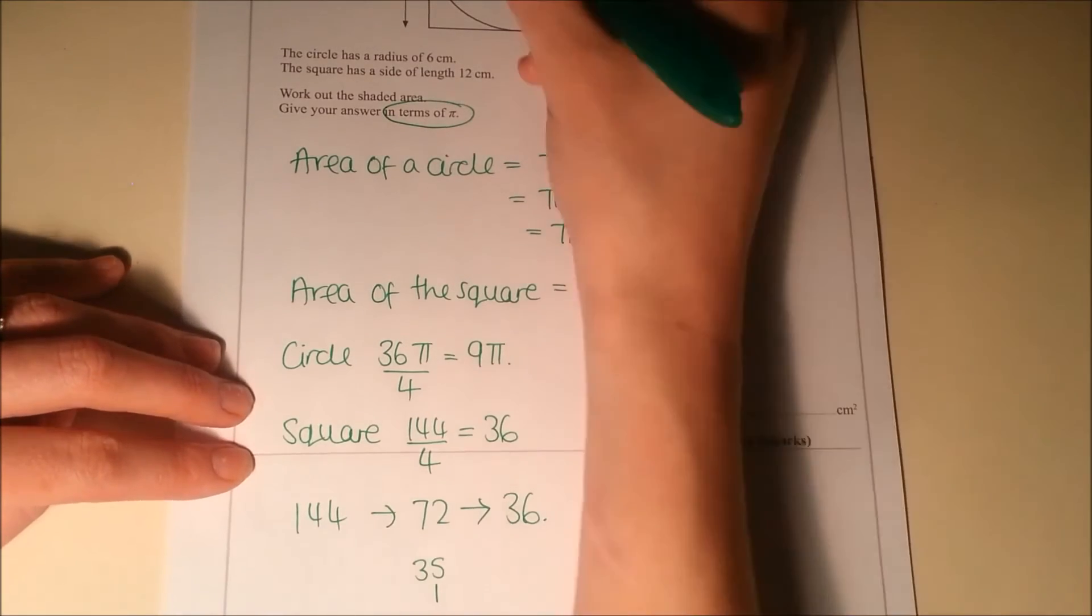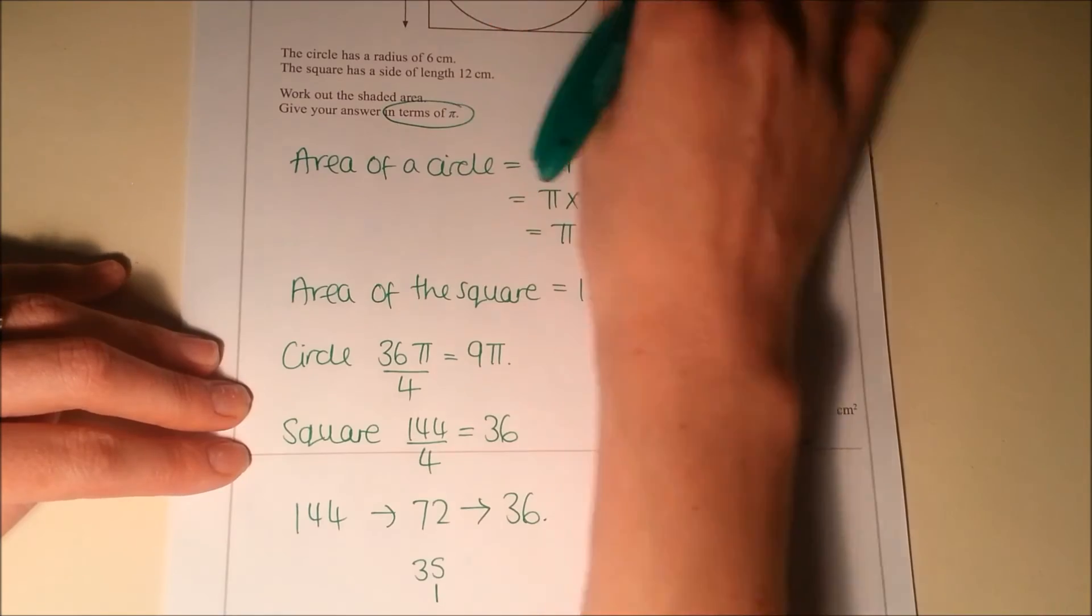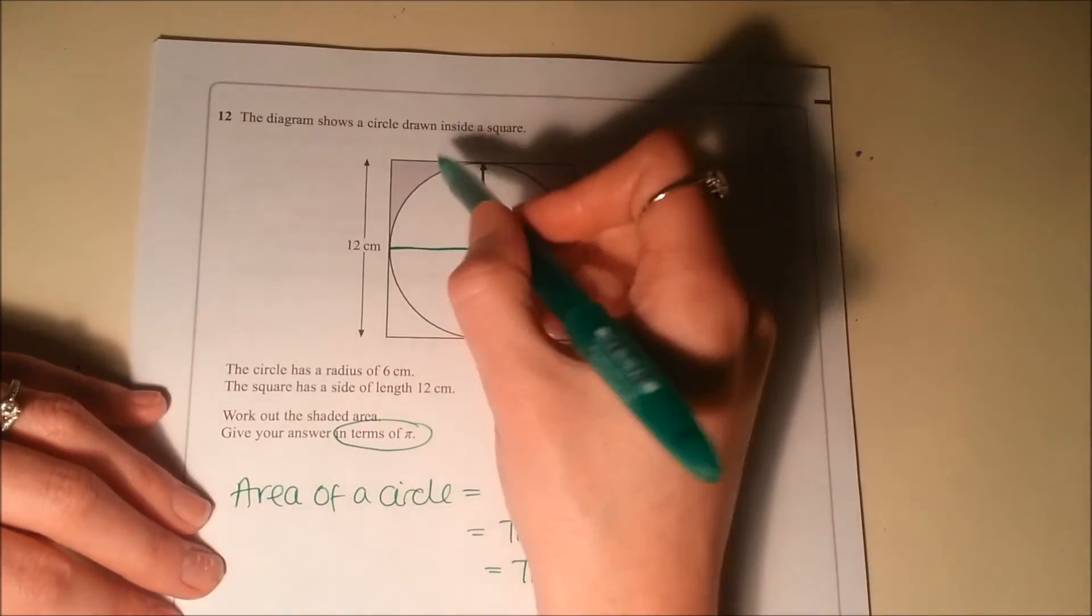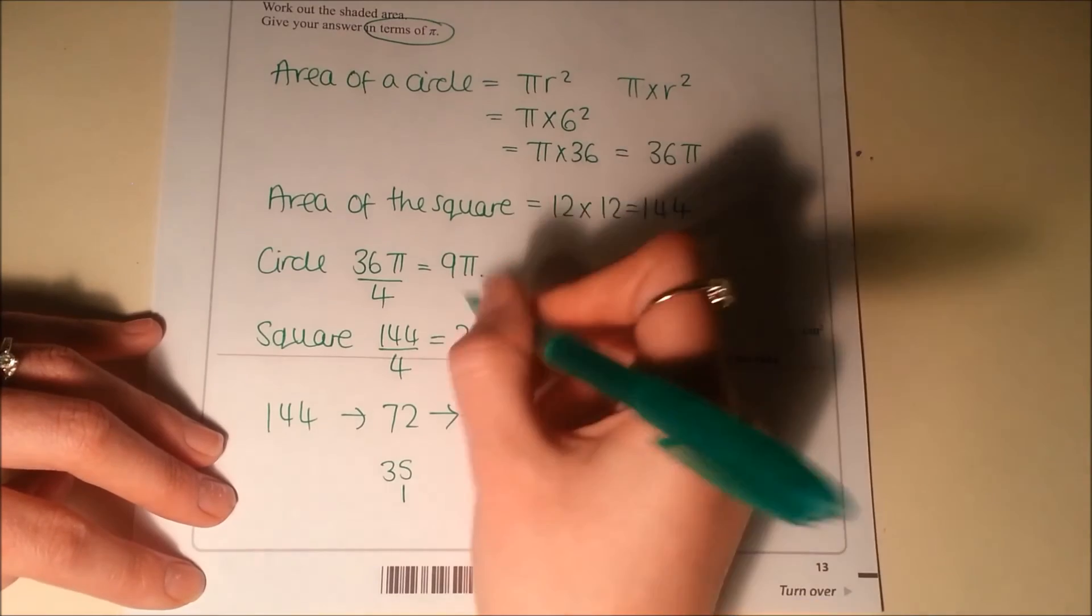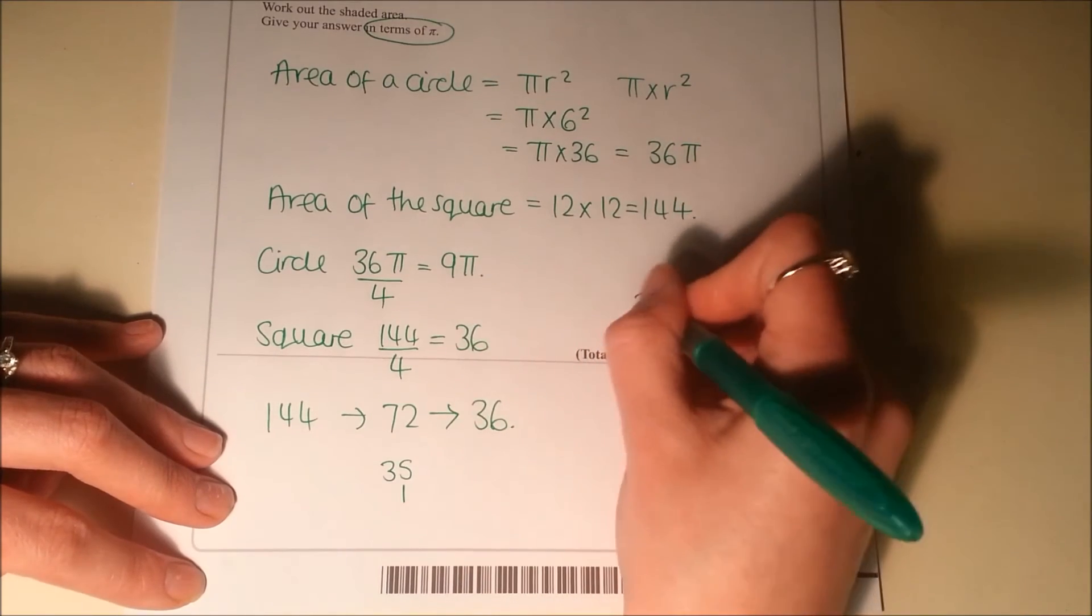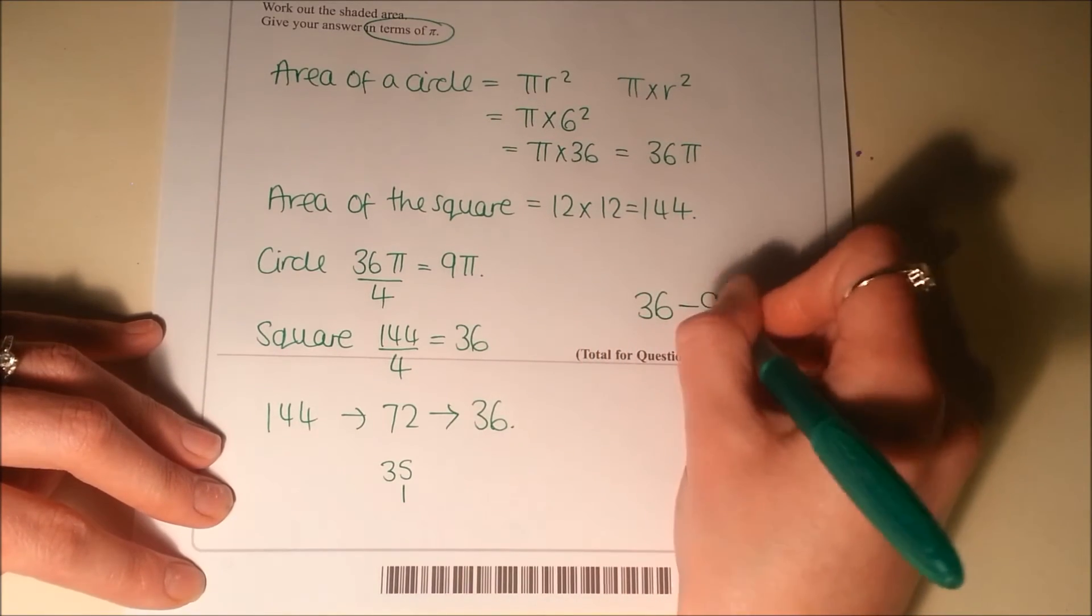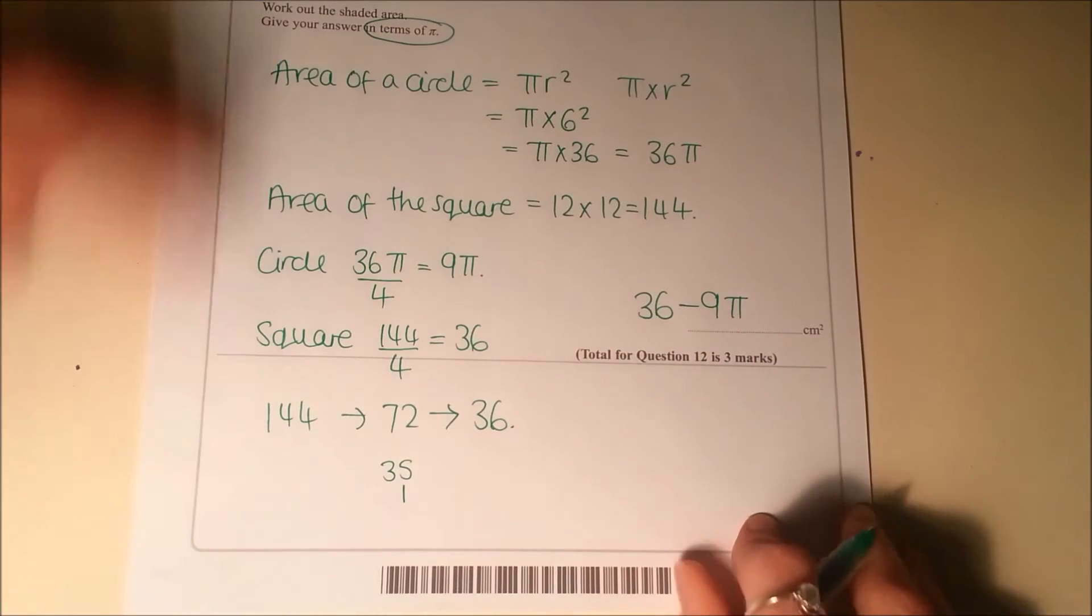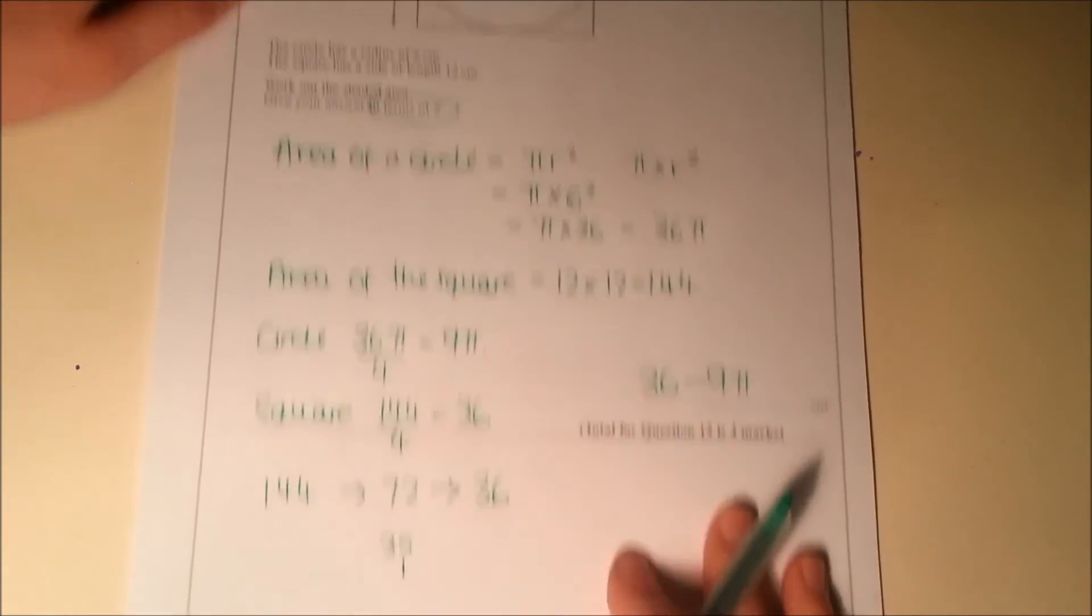And finally, the calculation we do to work out that shaded bit, so this shaded bit here, is we do the area of the square bits, that's 36, and then we would subtract the circle bit, the 9π. And that's our final answer, we can't do anything else with that.